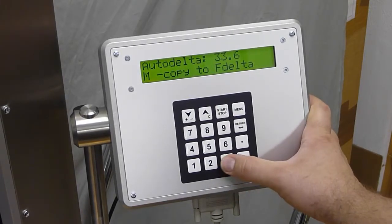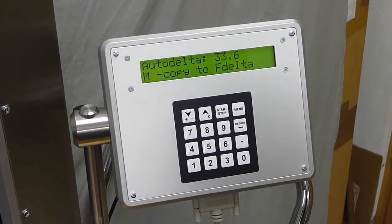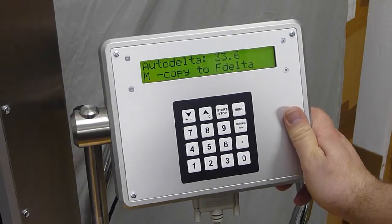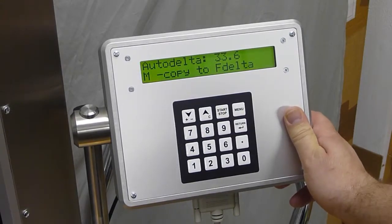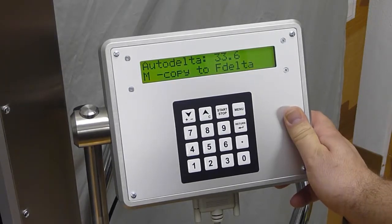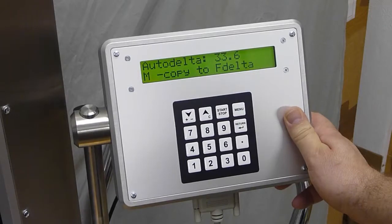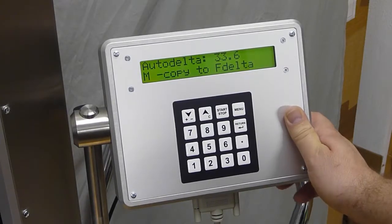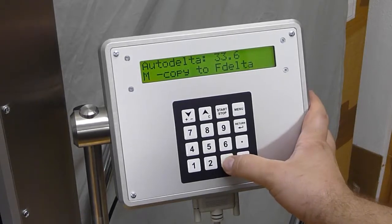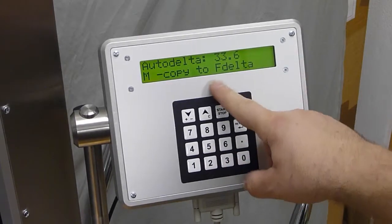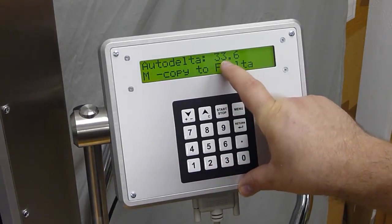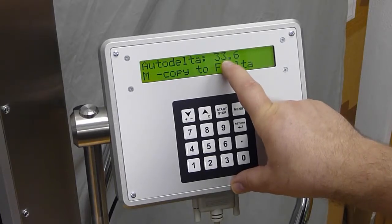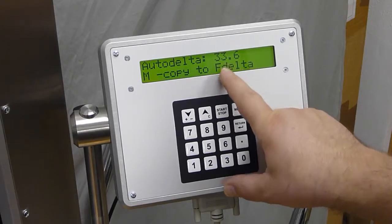Key number three calls auto delta. We made before one test with rubber and the machine didn't generate a message about rupture because F delta was too big. So with key number three we can call auto delta to ask which best value of F delta should be set to detect this rupture. So 100 Newton was too much, it should be